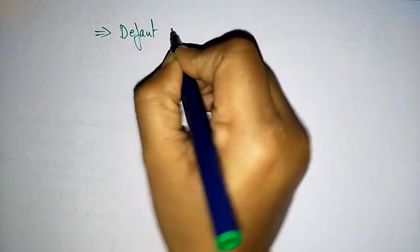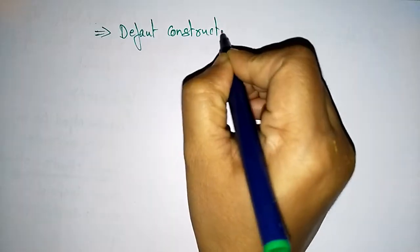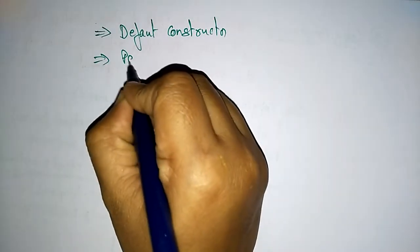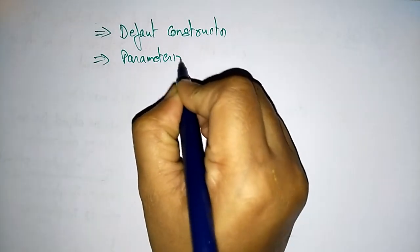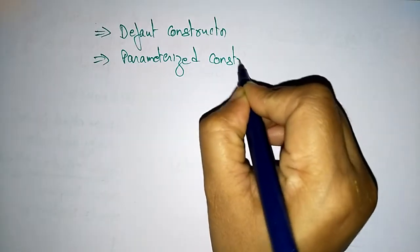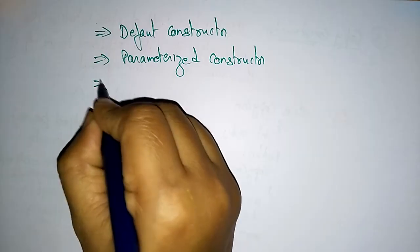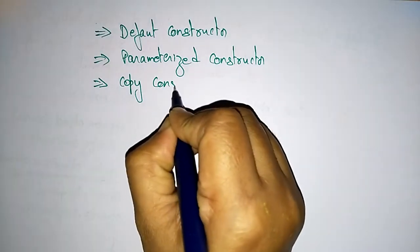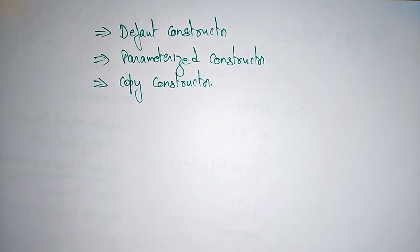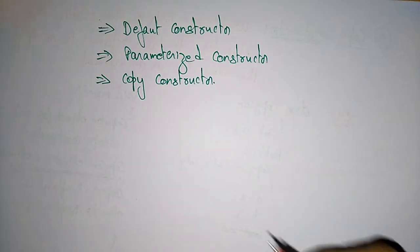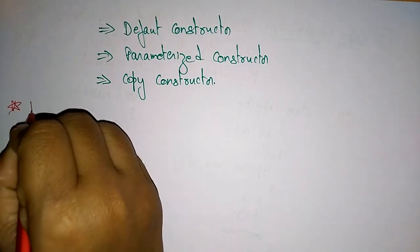Hi students. In the previous video I explained about the constructor and the different types of constructor: the default constructor, parameterized constructor, and the copy constructor. Now let us see the different ways of calling a constructor.